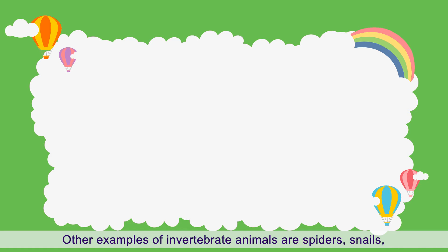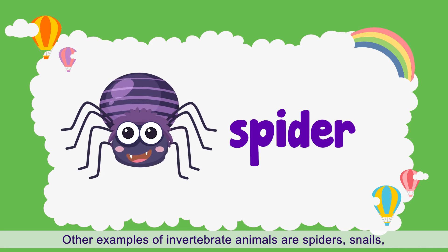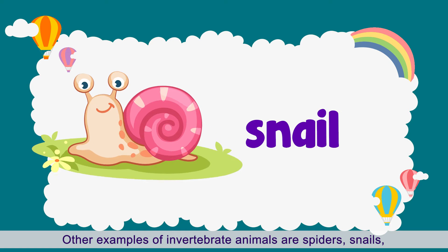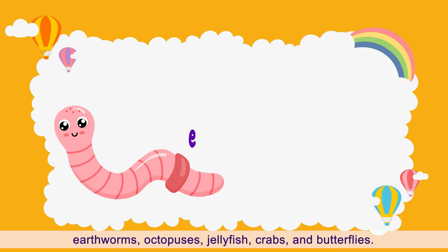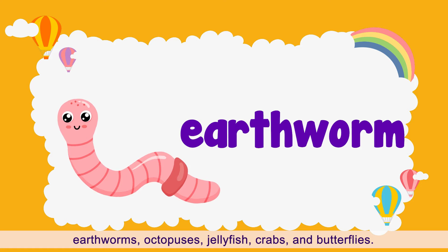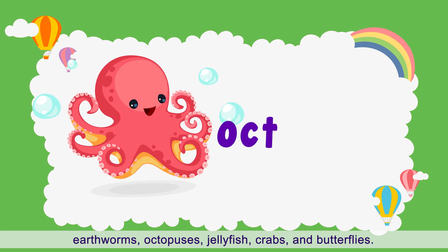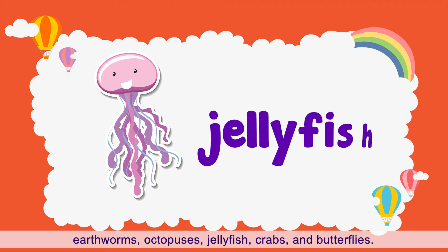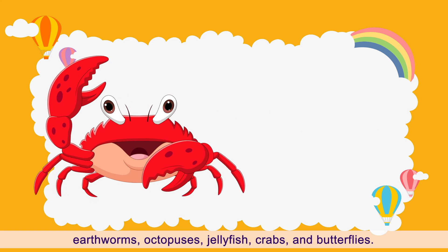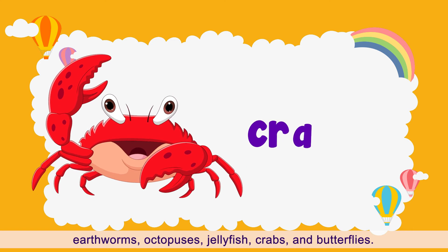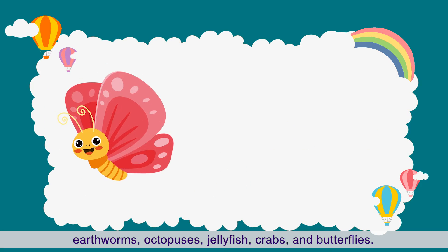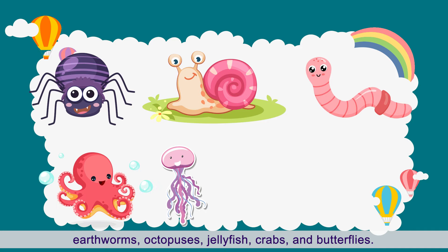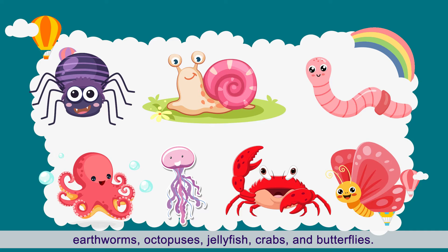Other examples of invertebrate animals are spiders, snails, earthworms, octopuses, jellyfish, and butterflies — all examples of invertebrate animals.